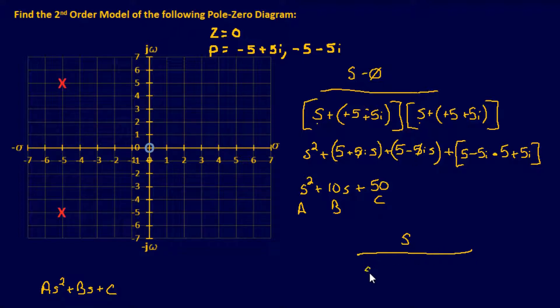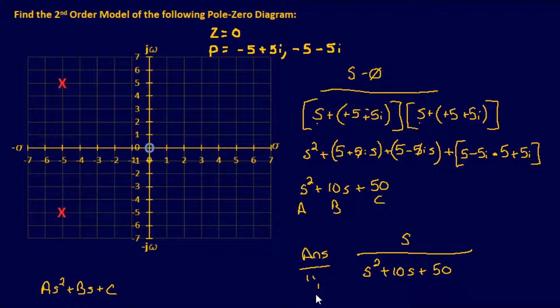The final answer is s over (s² + 10s + 50). Most of these examples are intentionally simple to get your feet wet, so that when you jump into Root Locus you're not encountering all this information at once. These methods should prepare you to solve problems and then tackle Root Locus. If you have any questions, please let me know, and I hope you all have a good day.